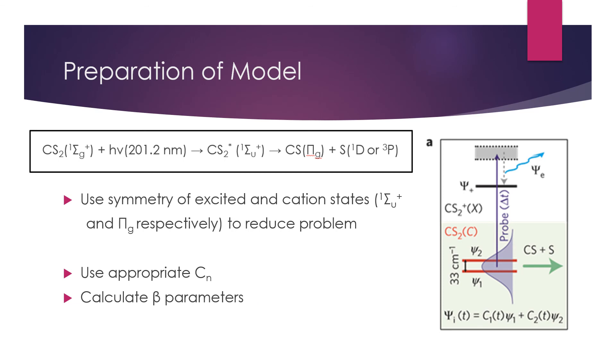Using the known symmetry of the system, the 1Σu+ symmetry of the excited state, and the πg symmetry of the cation and monosulfide, we can approximate the radial matrix elements and calculate our anisotropy parameters. If we choose our wave packet coefficient Cn to match the physical problem at hand, we can then calculate the angular distributions.